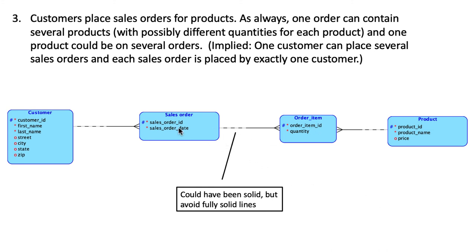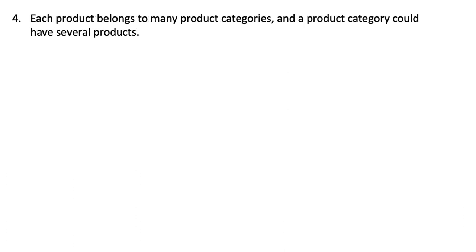This line could have been solid — you might say a sales order must have at least one order item. Typically sales orders are created on a single screen with the basic details and other details right below, so it's not a big problem. But I'm playing it safe by keeping this dashed as well.